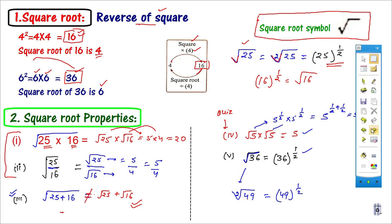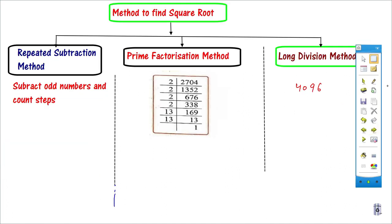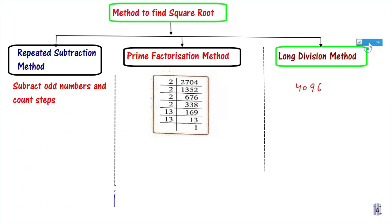My next point is my favorite table. Methods to find Square Root. There are all methods from the books. The first method is the repeated subtraction method. The second method is the prime factorization method. And the third is the long division method — this is the method by which we can do every question. But the repeated subtraction method is very rarely used, because it has so many limitations.